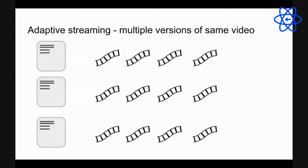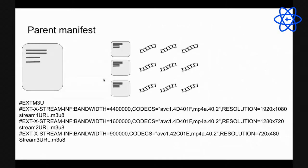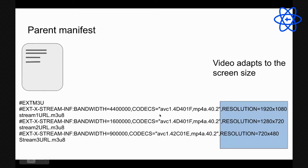You can have different versions of the same video: 1080p, 720p, 480p, each with their own segments and manifests, plus a parent manifest describing all the adaptive streams. For a big screen you serve 1080p, for smaller screens 480p. The manifest file tells the player the resolution of each stream so it can adapt accordingly.